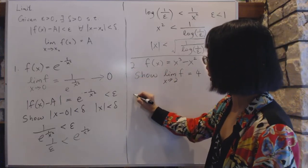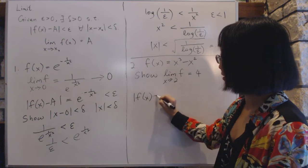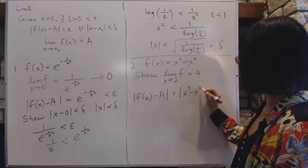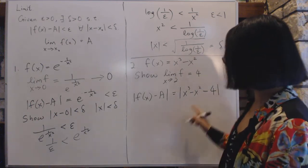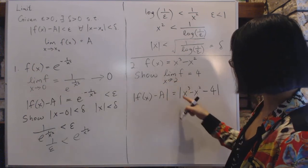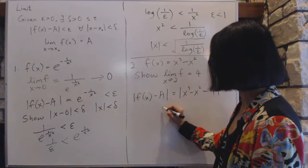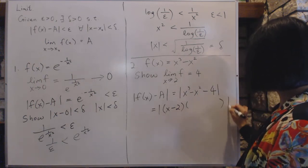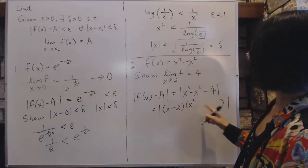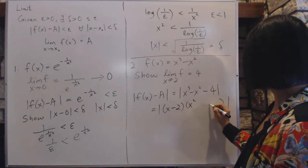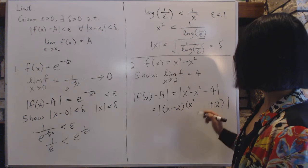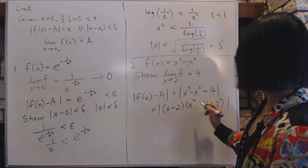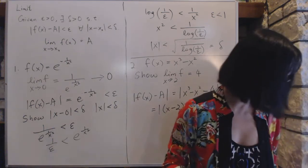We compute |f(x) - a|, which is |x³ - x² - 4|. Since x equals 2 is a root of x³ - x² - 4, we factor out (x - 2). Factoring gives (x - 2) times (x² + x + 2) — you can verify by expanding that the remaining factor must have the correct terms and constant to produce the original expression.